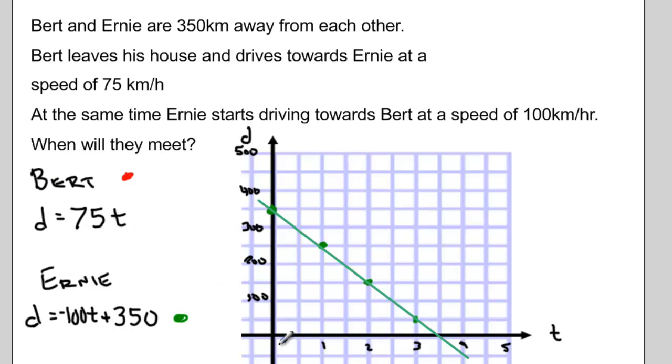Now looking at Bert's equation, Bert, being a direct variation, starts at the origin and goes up 75 kilometers every hour. He keeps doing this for every hour that goes by.